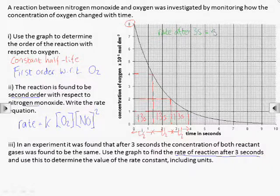We can use the graph to work out the rate of the reaction at any time. The gradient of the graph at that time is equal to the rate. We find the gradient by drawing a tangent, and then working out the gradient of the tangent as the change in y over the change in x.